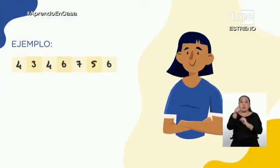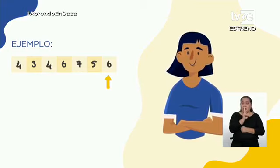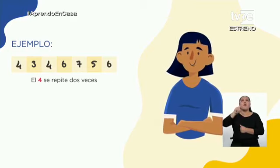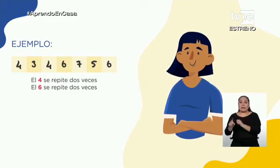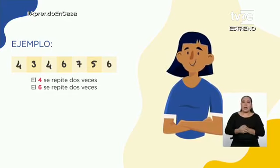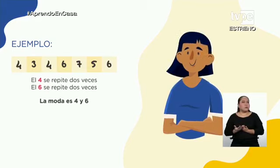¿Y cómo lo vamos a expresar? Pues muy sencillo. Escribimos Mo —M mayúscula sub O— y decimos: la moda es 7. La moda tiene un par de características muy interesantes. En algunos casos, por ejemplo, si vamos a encontrar la moda en el conjunto: 4, 3, 4, 6, 7, 5 y 6, el 4 aparece dos veces y el 6 aparece dos veces. Entonces, ¿cuál es la moda? En este caso tenemos dos valores para la moda: el 4 y el 6. Es decir, tenemos una distribución de datos bimodal.